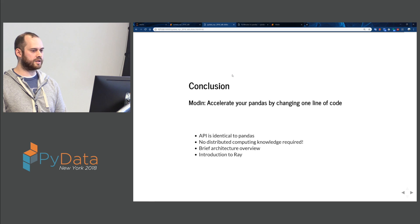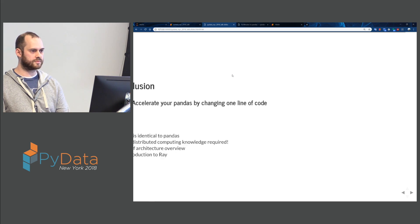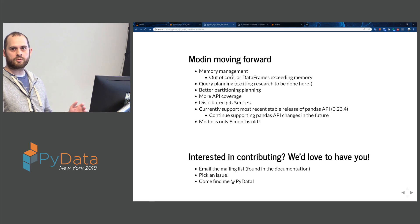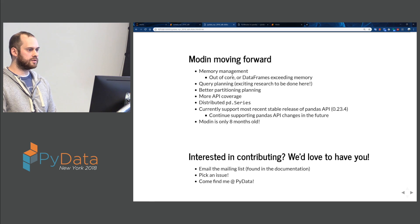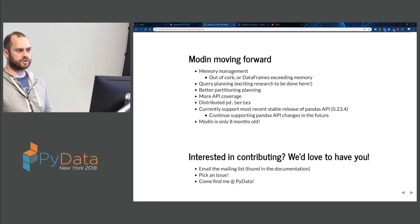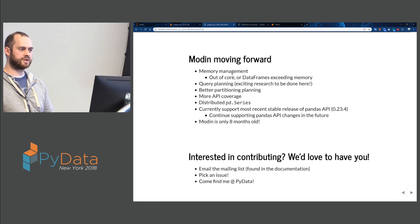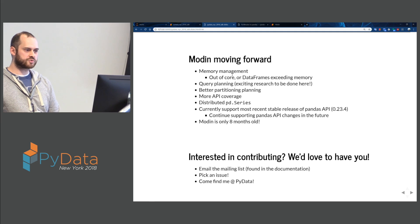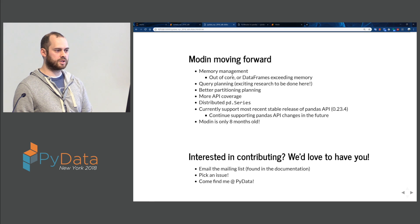I talked at a high level about the architecture and gave a brief introduction to Ray. Moving forward, we have a long list of things: memory management — Pandas is kind of memory hungry and we hope to continue improving on that. We also want to implement out-of-core data frames that exceed memory, query planning, better partitioning planning, more API coverage, and distributed Pandas Series. We currently support the most recent stable release of the Pandas API, which is 0.23.4, and as Pandas continues to change, we'll change with it.